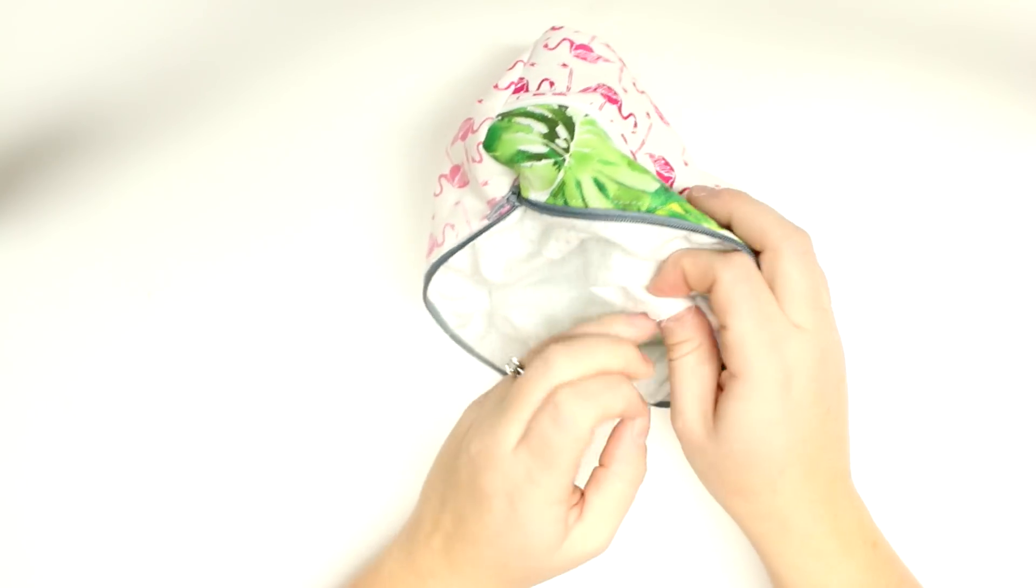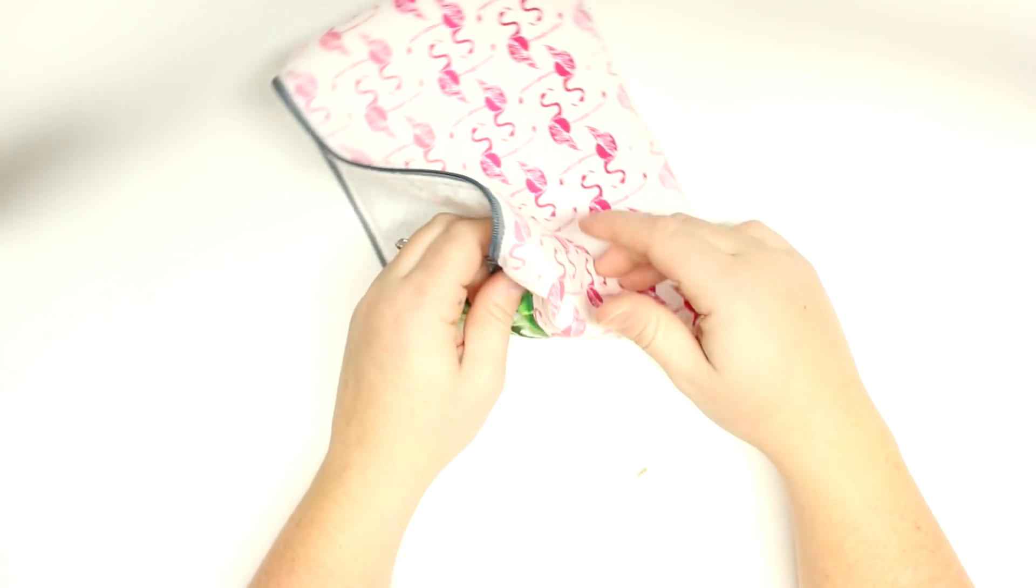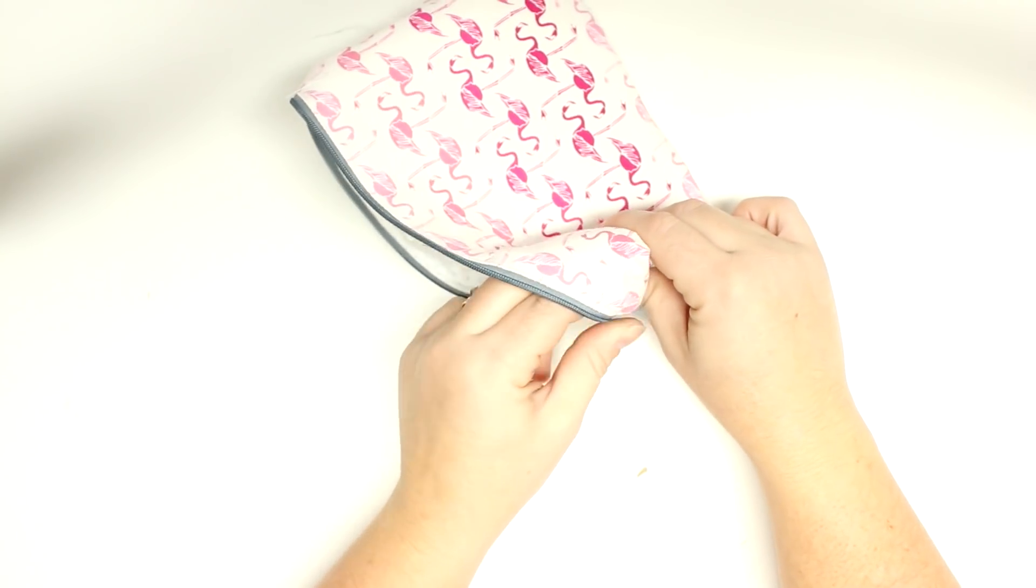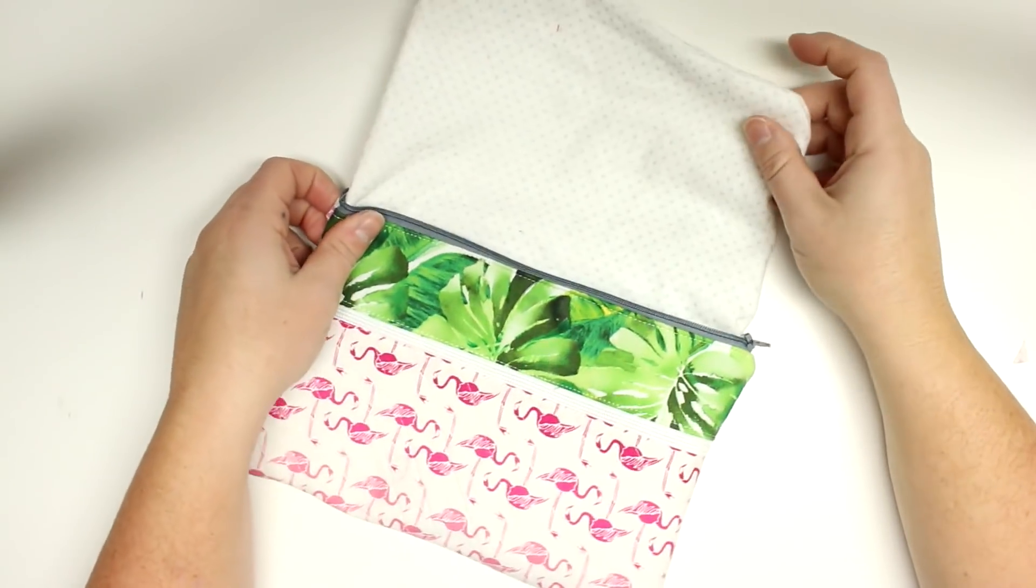And then after that, then you can flip it right sides out through the hole that you left in the lining. And then you can just flatten it out and push that zipper out and make sure it is nice and all the corners are poked out and everything.